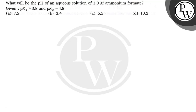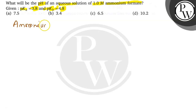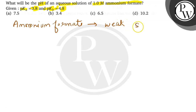Hello everyone, let's read the question. What will be the pH of an aqueous solution of 1.0 molar ammonium formate, given pKa is equal to 3.8 and pKb is equal to 4.8? We know that ammonium formate is a weak salt — it is made from a weak acid and a weak base.